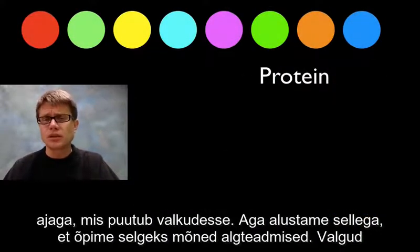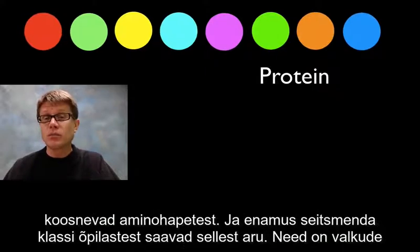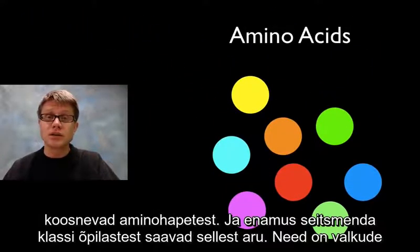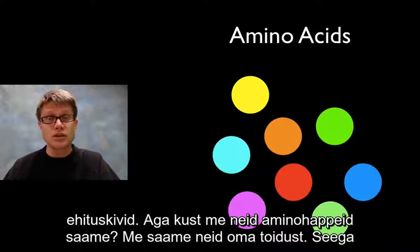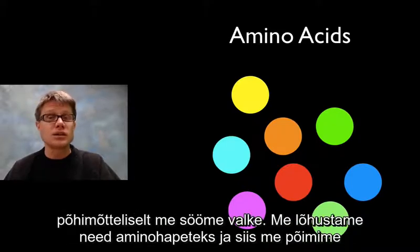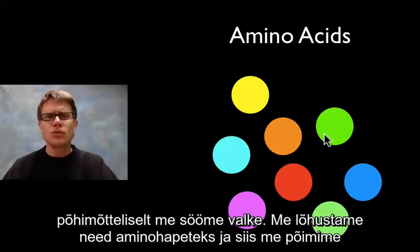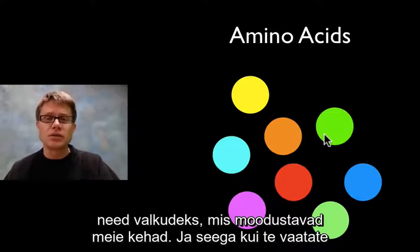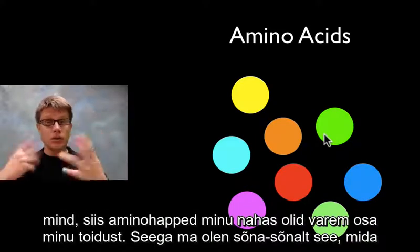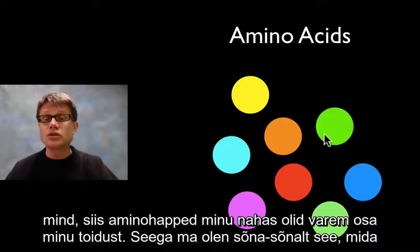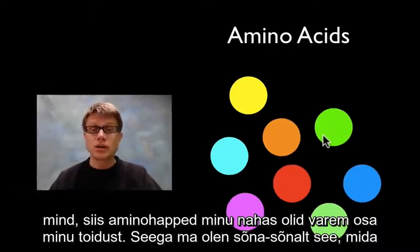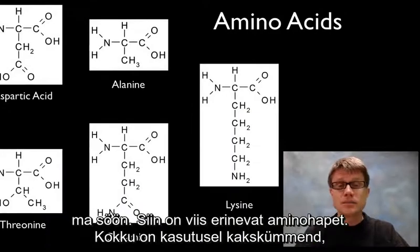Let's start by building a little bit of knowledge. Proteins are made of amino acids — most 7th graders understand this. They're the building blocks of proteins. Where do we get those amino acids? We get them in our diet. Basically we eat proteins, break them down into amino acids, and then weave those back together again into the proteins that make us. The amino acids in my skin used to be part of my food — I literally am what I eat.